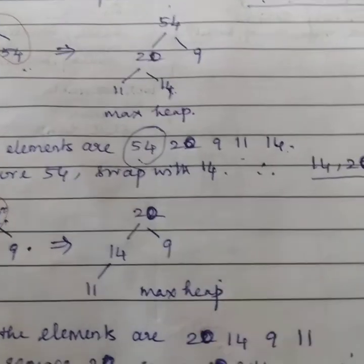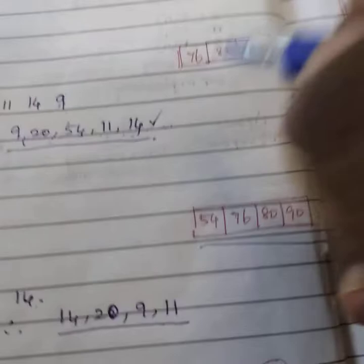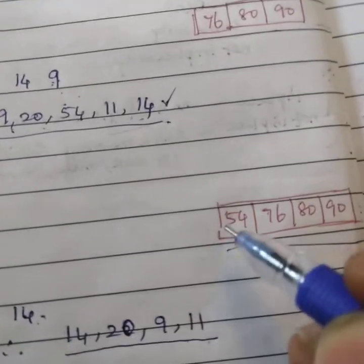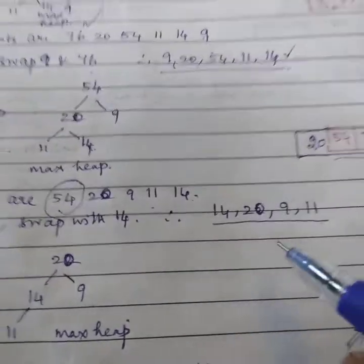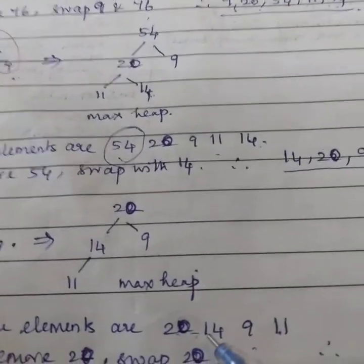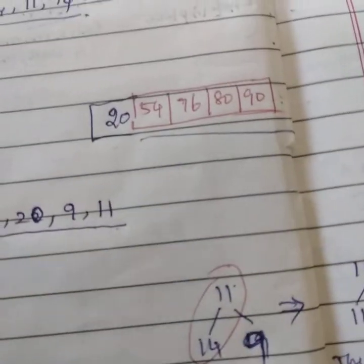We need to take this 20. For that, we need to interchange these two and take 20 here. So now the tree becomes with the three values. Just 11, 14 and 9.